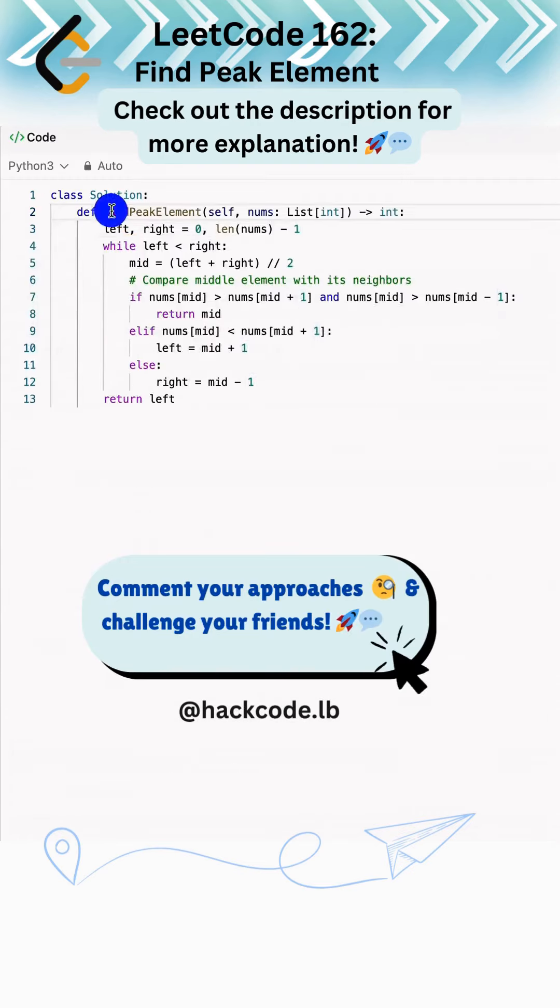We use a binary search algorithm. Initialize left and right to the ends of the array, then do iteration while left is less than right. For each iteration, find the mid, which is left plus right divided by 2. We use integer division because when we get 2.5, it will round off to 2.